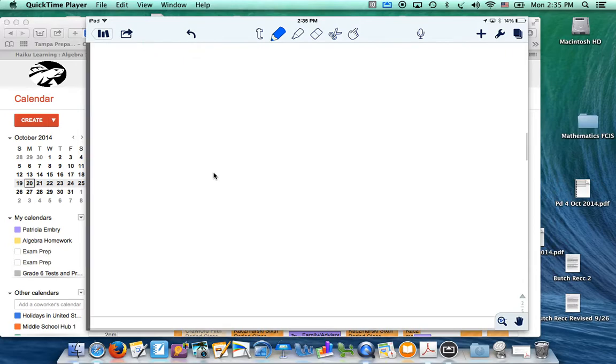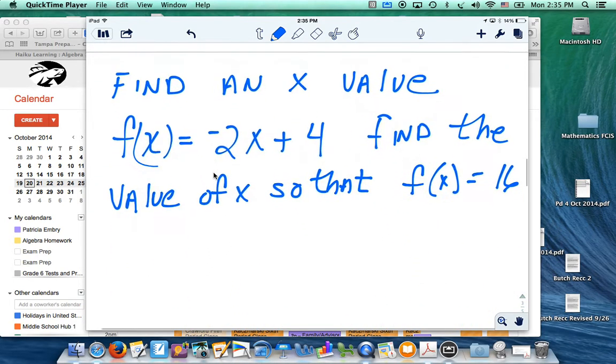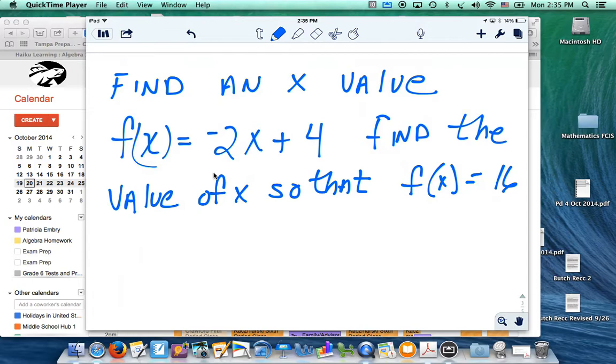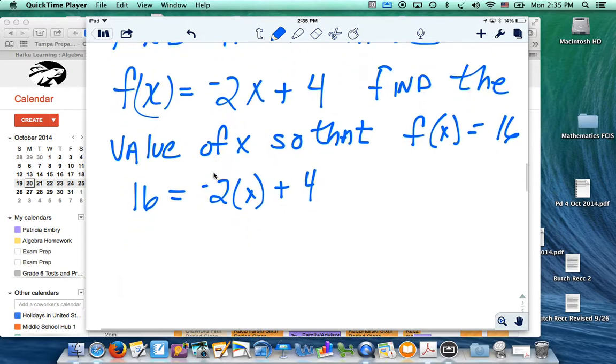Now, there is another type of problem that you might run across, and it's asking for something slightly different. Find an x value. f of x equals negative 2x plus 4. Find the value of x so that f of x equals 16. Well, this time, I'm told the answer. f of x is 16. I'm going to put that 16 right here. And what am I looking for? I'm looking for the number that will make it come out to be 16.